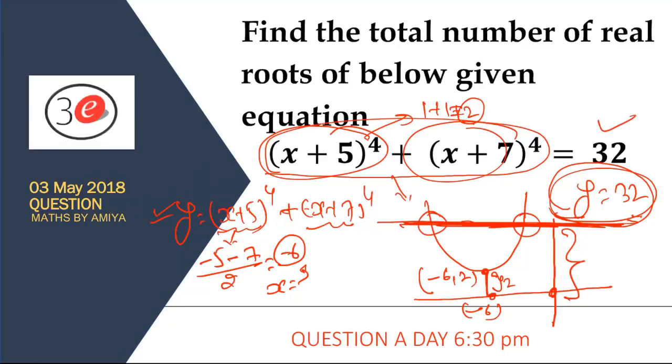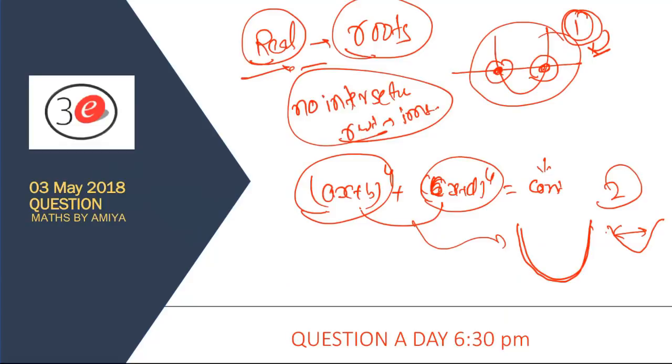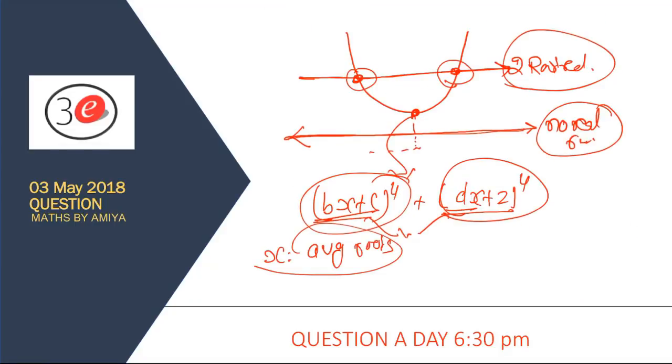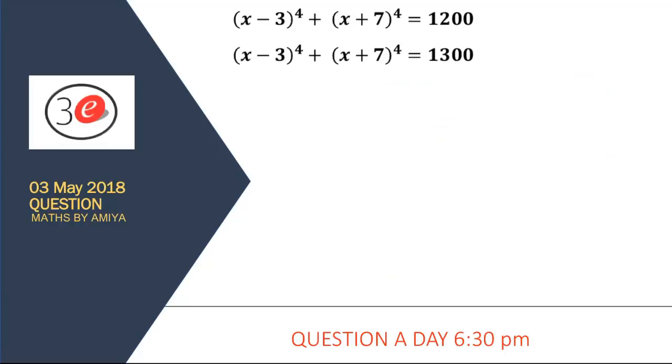At distance 32, this graph and that graph are cutting at two points. It means we have two real roots. Finding real roots is best done using graphs. Your learnings are simple: first, know how the graph looks; second, the point of intersection gives real roots; third, if we are below, no real roots; if cutting at two points, we have two real roots.